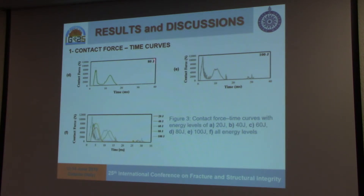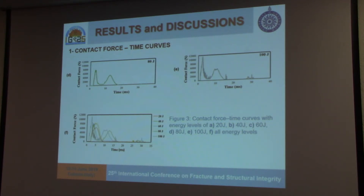With 80 and 100 joules, we got two peak points. The first peak indicates the indenter going through the upper face sheet, with force levels higher than the previous ones. Then it was going through the foam and hitting the lower face sheet below. Here you can see all the results together.